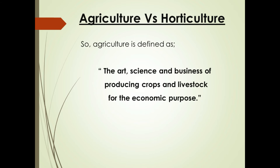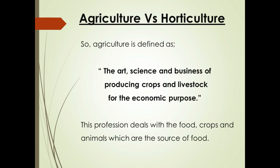So, agriculture is defined as the art, science, and business of producing crops and livestock for the economic purpose. This profession deals with food, crops, and animals which are the source of food.